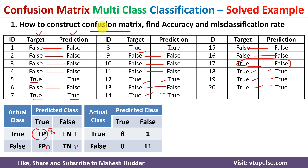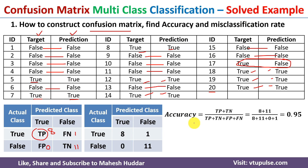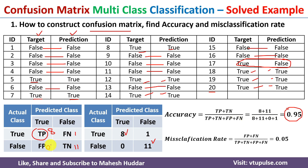Once we have the confusion matrix, the next step is to calculate accuracy and misclassification rate. Accuracy is equal to true positive plus true negative divided by all possibilities — that is (8 + 11) / (8 + 11 + 0 + 1) = 0.95. Misclassification rate is false positive plus false negative divided by all possibilities — (0 + 1) / 20 = 0.05. Adding accuracy and misclassification rate gives 1.